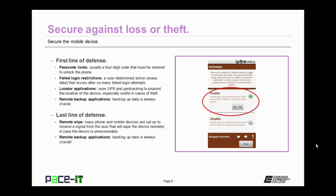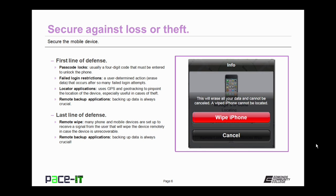The last part of your first line of defense is your remote backup application. Make sure that you always have a current backup of your mobile device in case you cannot recover it. Your last line of defense is the remote wipe. Many phones and mobile devices are set up so that they can receive a signal from the user that will wipe all data remotely. You should only use this if you cannot recover your device, but it will ensure the privacy of your data. Also included in this last line of defense is your remote backup application — always make sure that you have a current backup of your data.